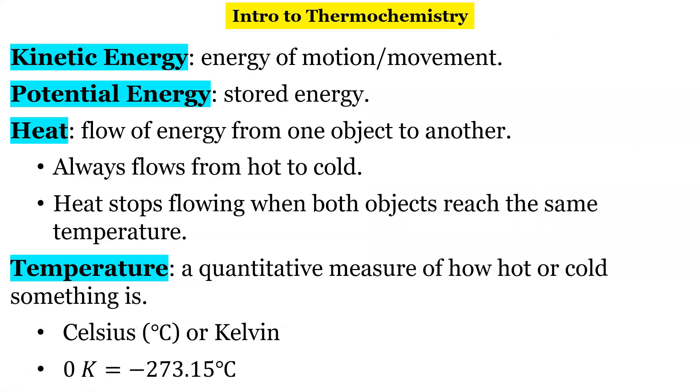So let's go through some definitions. The first two definitions should be familiar from physics. Kinetic energy is energy of motion or movement. Potential energy is stored energy. So in physics we have the example of a ball on a hill. If you have a ball sitting on top of the hill here, at the top of the hill all of our energy is potential energy. At the bottom of that hill when it's moving this is all kinetic energy.